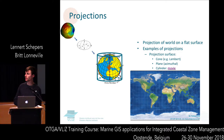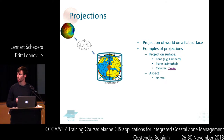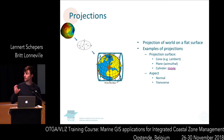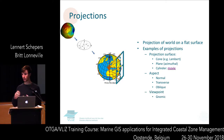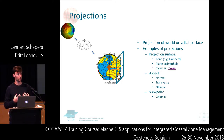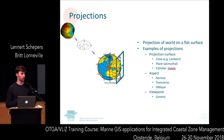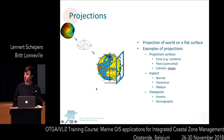There are different kinds of projections based on the surface: a cone, a plane, and a cylinder. You also have categories based on the aspect. If it's a straight cylinder, it's called a normal projection. If the cylinder is shifted, it's called a transverse projection. If the cylinder is at an angle, it's called an oblique projection. There are also categories based on viewpoint: gnomic projections have the light from the centre, while stereographic projections have the viewpoint at the outer edge of the world.